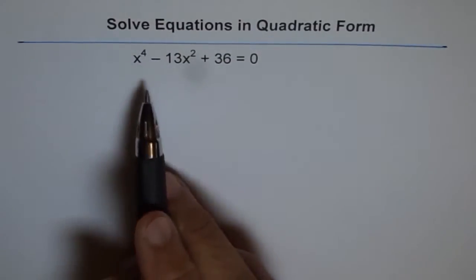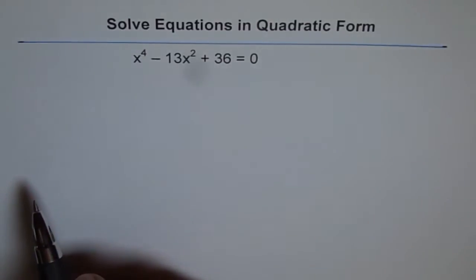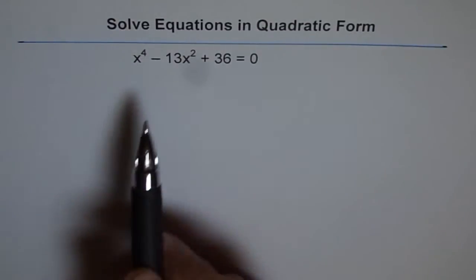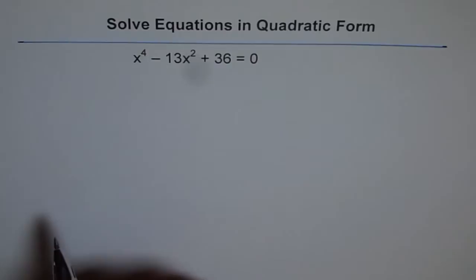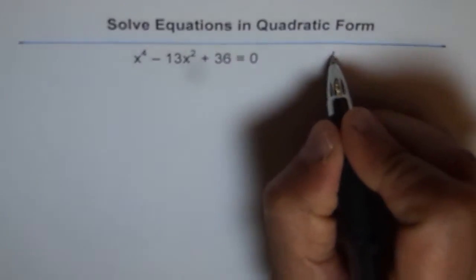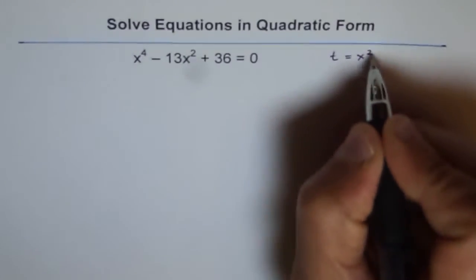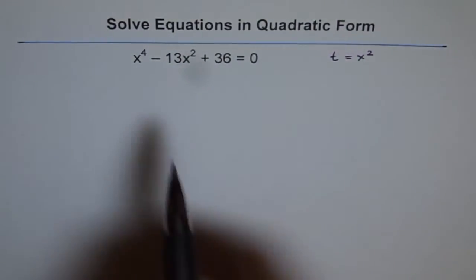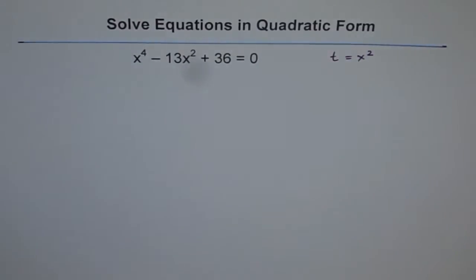But it's a trinomial, it's got 3 terms and the degrees are even. So that suggests that if we make a substitution, let's say if I write t equals x squared, in that case this equation can be written in quadratic form.